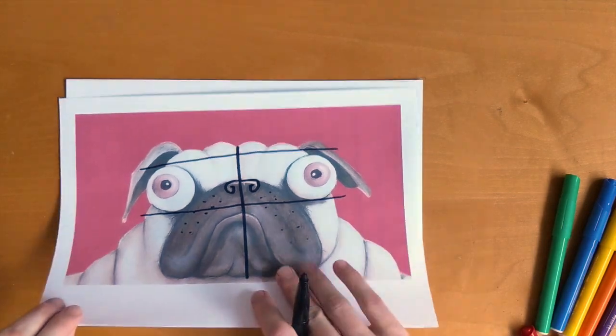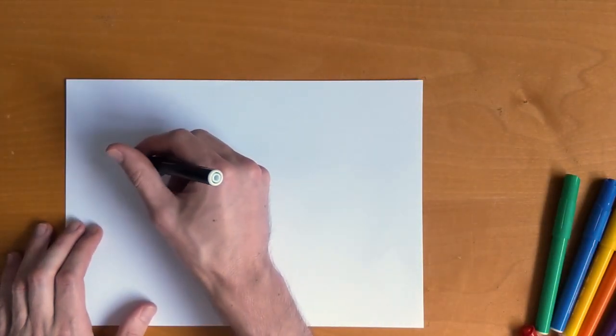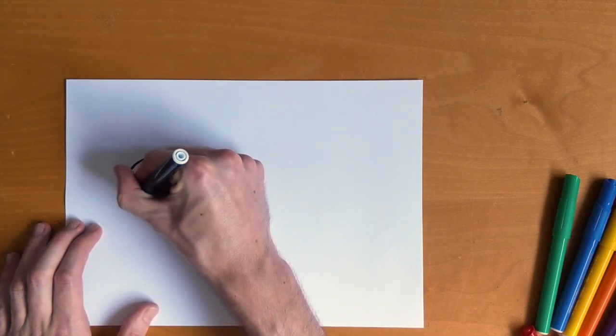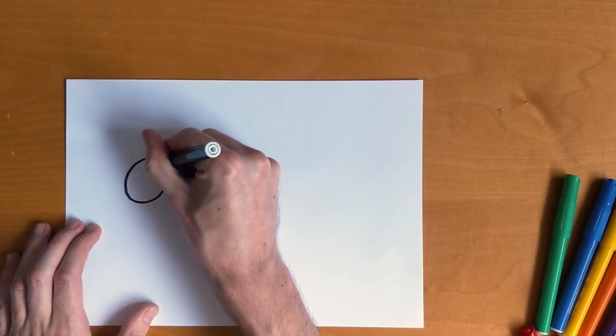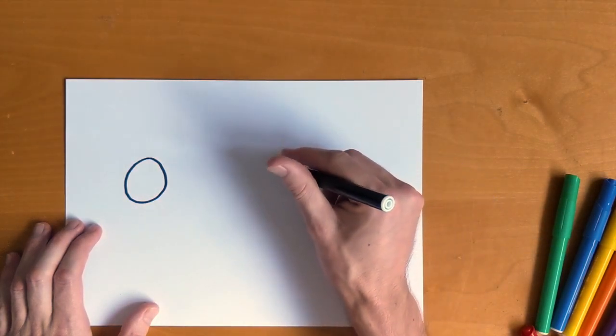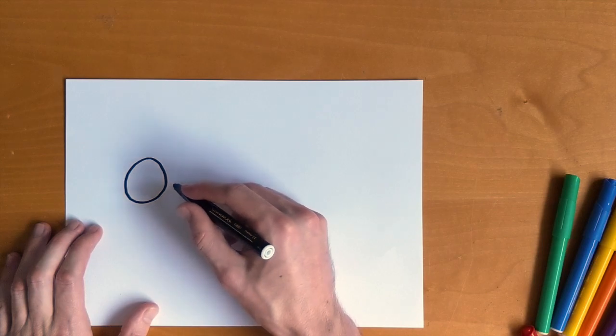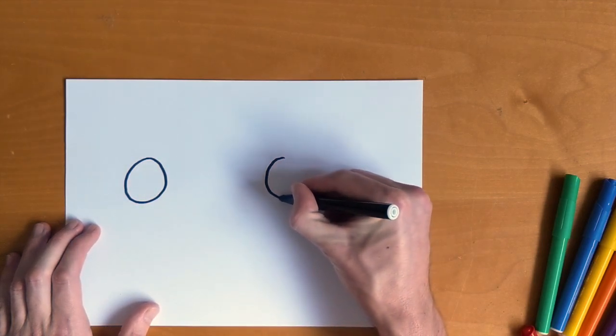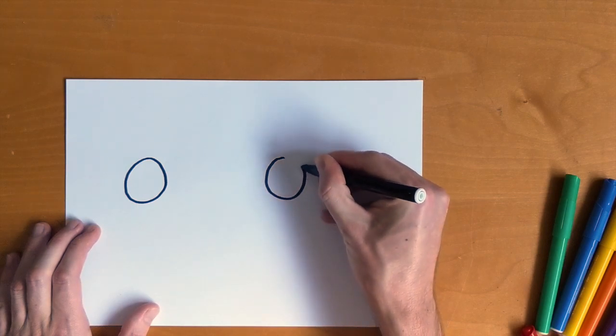So you will need a blank piece of paper and a pen. We're going to start off with the eyes, so let's start by drawing a big circle on the left side of the piece of paper and another big circle. Make sure it's in line on the other side—big, big circle. Try and make it join as neat as you can.